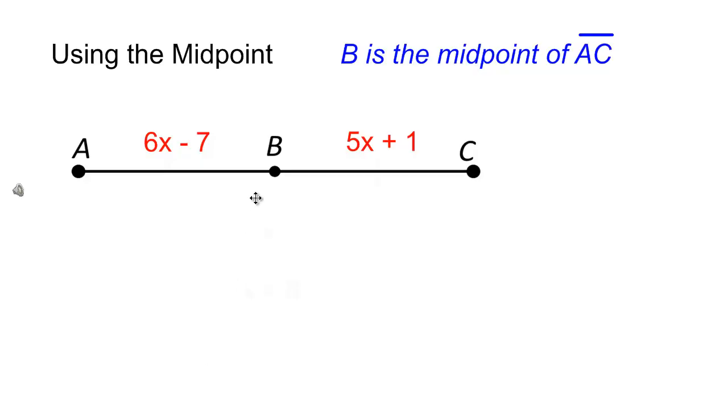Let me show you how we use the definition of midpoint to set up an equation. We're given that B is the midpoint of segment AC. When we see the word midpoint, we know these have to be congruent segments because the midpoint divides this into two congruent parts. That means these segments are equal to each other.